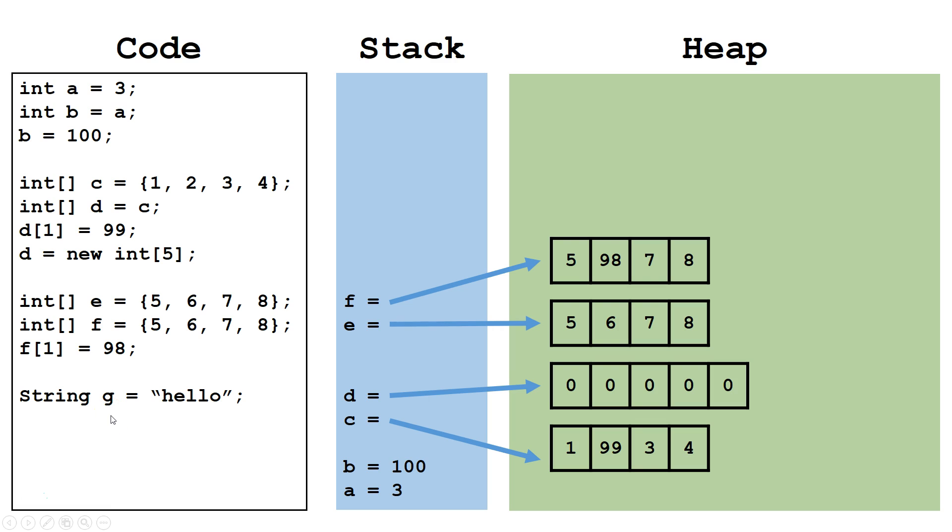Next, we are going to look at an immutable object. We have declared a variable G of type string and have it point to a new string on the heap, hello. We are creating another variable H of type string and copying the pointer from G. So now G and H are pointing to the same object on the heap.